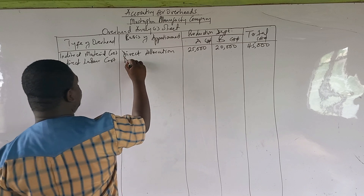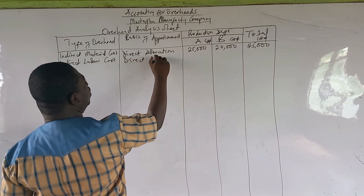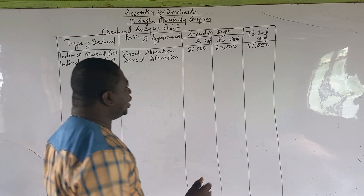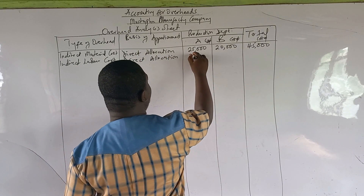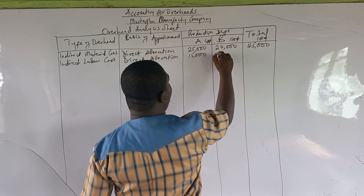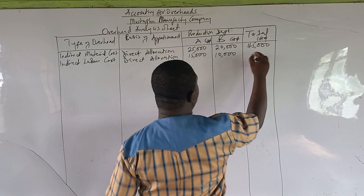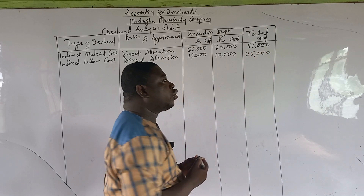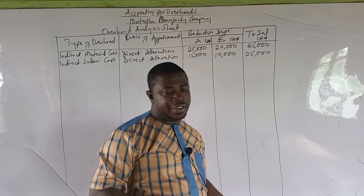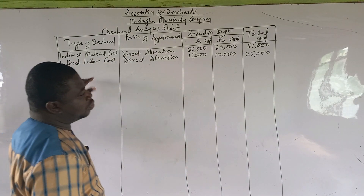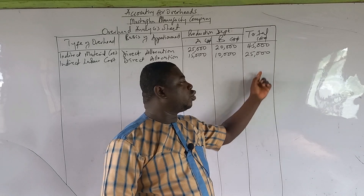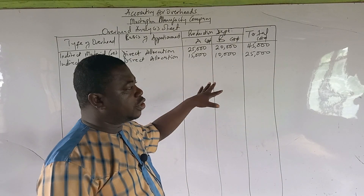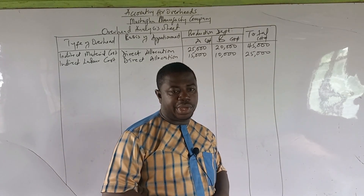The next one is indirect labor costs — that is also direct allocation, because it was given in the question already split. Department A is 15,000 and Department B is 10,000, so the total is 25,000. When we get to the indirect expenses, that is where we are going to split according to the common basis.